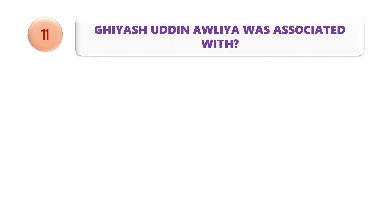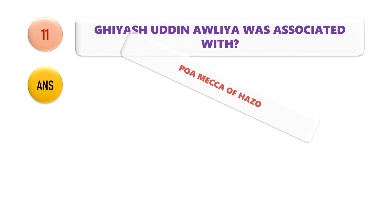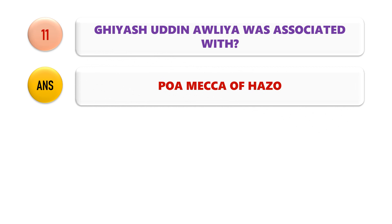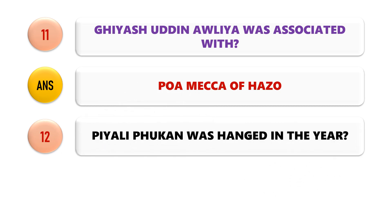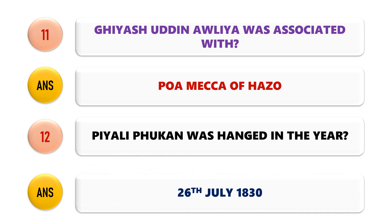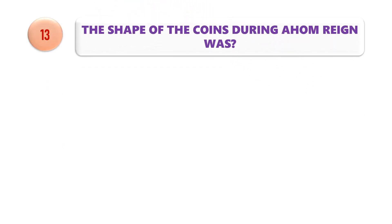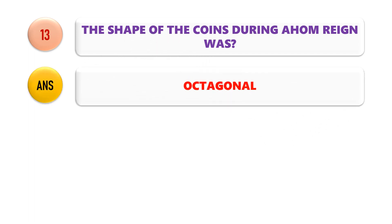Question No. 11: Giyasuddin Auliyah was associated with what? Giyasuddin Auliyah was associated with Pua Mukha of Hajo. Question No. 12: Piyali Phukan was hanged in which year? Piyali Phukan was hanged on 26 July 1830. Question No. 13: What was the shape of coins during the Ahom reign? The shape of the coins during the Ahom period was octagonal.